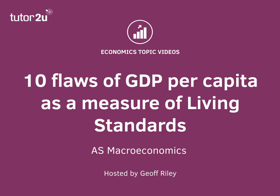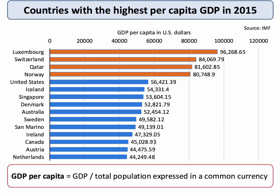Hi there. Here's a revision video looking at 10 flaws of GDP per capita as a measure of living standards. Here's a chart showing the countries with the highest per capita GDP in dollars in 2015. Countries such as Luxembourg, Switzerland, Qatar and Norway are streets ahead of many others, well ahead of the United States, Singapore and Australia. The UK comes in around $43,000 on a per capita basis expressed in dollar terms. The purpose of this video is to think about why GDP data can give a distorted picture of living standards in a particular country.